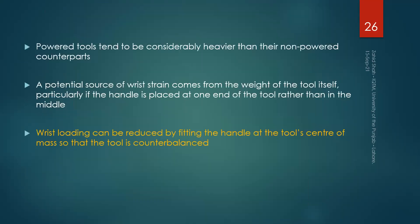The last factor is weight. Power tools tend to be considerably heavier than their non-powered counterparts. A potential source of wrist strain comes from the weight of the tool itself — as we saw in our discussion on biomechanics, the weight of something held by the user applies a torque. Wrist loading can be reduced by fitting the handle at the tool's center of mass so that the tool is counterbalanced, rather than placing the handle at one end.